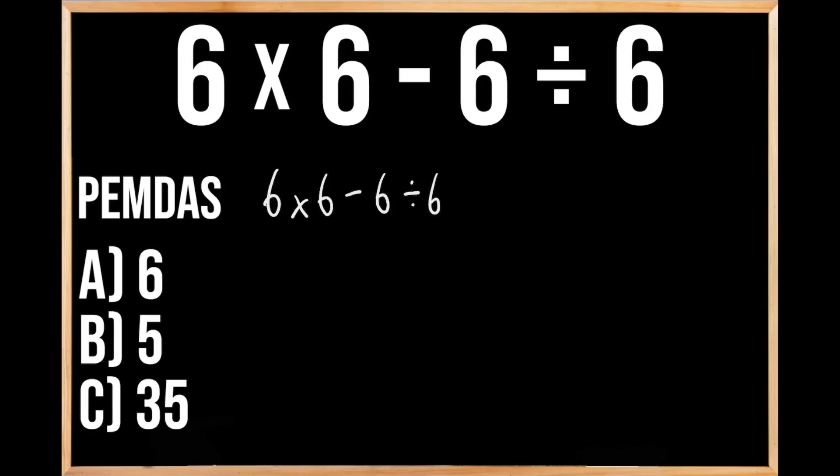Now a lot of people when solving this problem will just work from left to right. So first they're going to multiply 6 times 6, which gives us 36, and then they're going to subtract 6 from that 36, which is going to give us 30, and then they're just going to divide that 30 by 6, which is going to give us 5. So the answer should be B, 5.